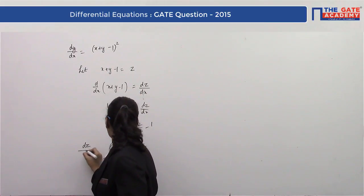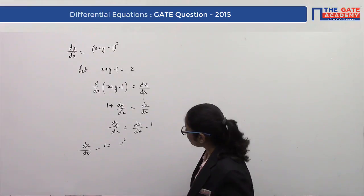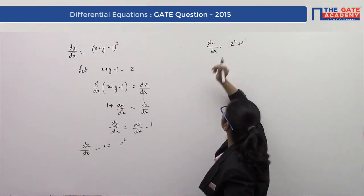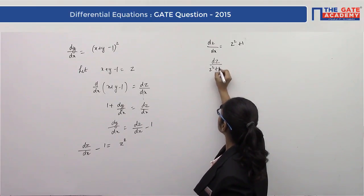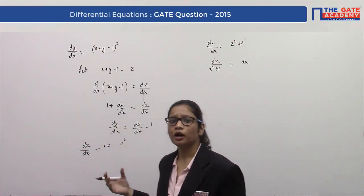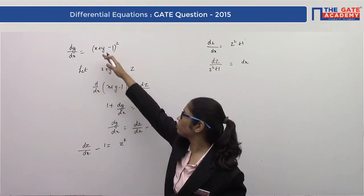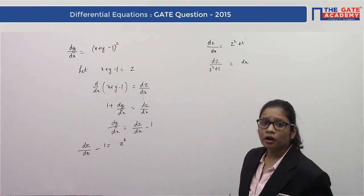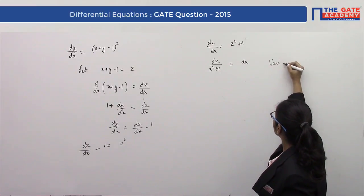Substituting into the original equation: dz/dx − 1 = z², which rearranges to dz/dx = z² + 1. Now the variables are separable: dz/(z² + 1) = dx. This transforms the question into a straightforward variable separable method problem.